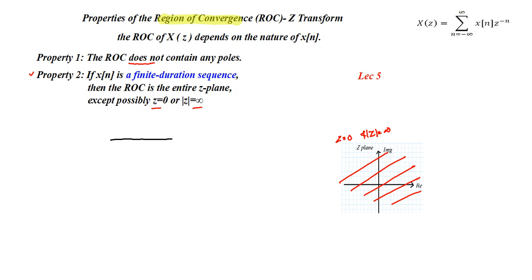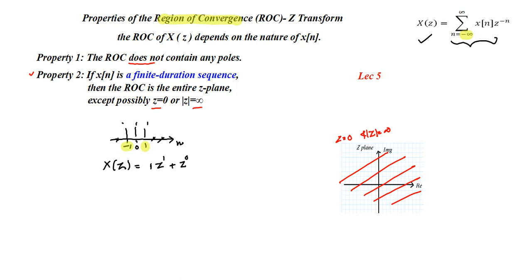We will see one example of a finite duration sequence. Here x(n) equals 1 at n = 0, magnitude 1 at n = -1, and magnitude 1 at another point, and zero for all other values. Expanding using the z-transform definition from n = -1 to 1, we get X(z) = z^1 + z^0 + z^(-1), which contains terms z and z^(-1).